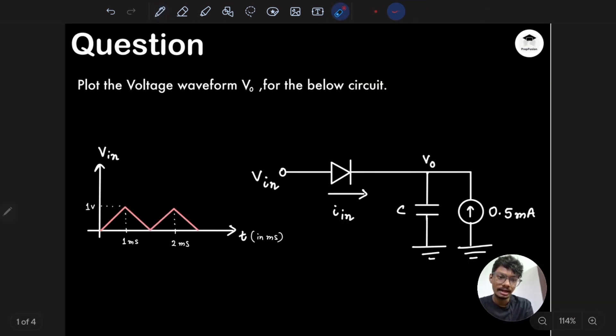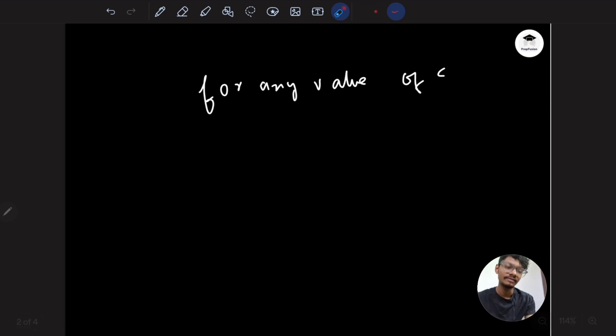For any value of C we don't care, because the voltage across the cathode of this diode will always be higher than the anode. This will go very higher than one volt. We don't know until when this circuit was kept in place, but this was kept in place for infinite amount of time, so the cathode voltage will be very high. Hence, D will never be on - D will always be off.